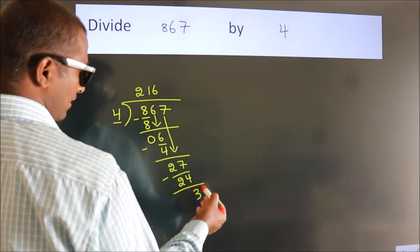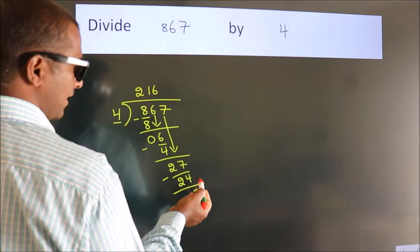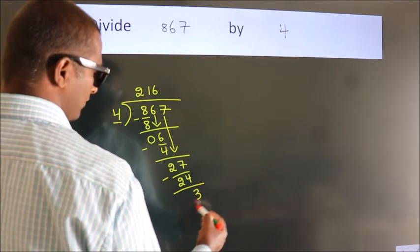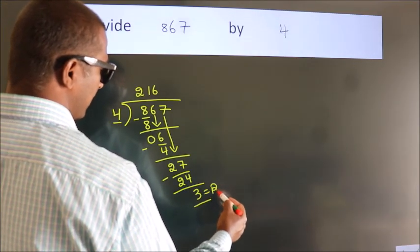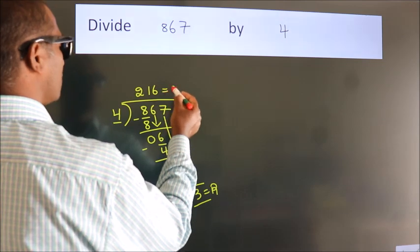After this, no more numbers to bring down. So we stop here. This is our remainder. This is our quotient.